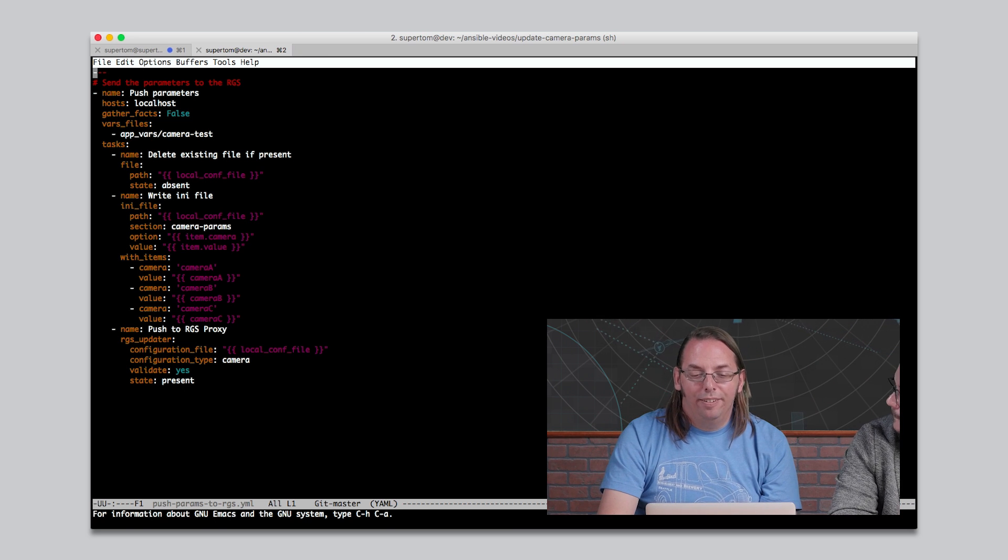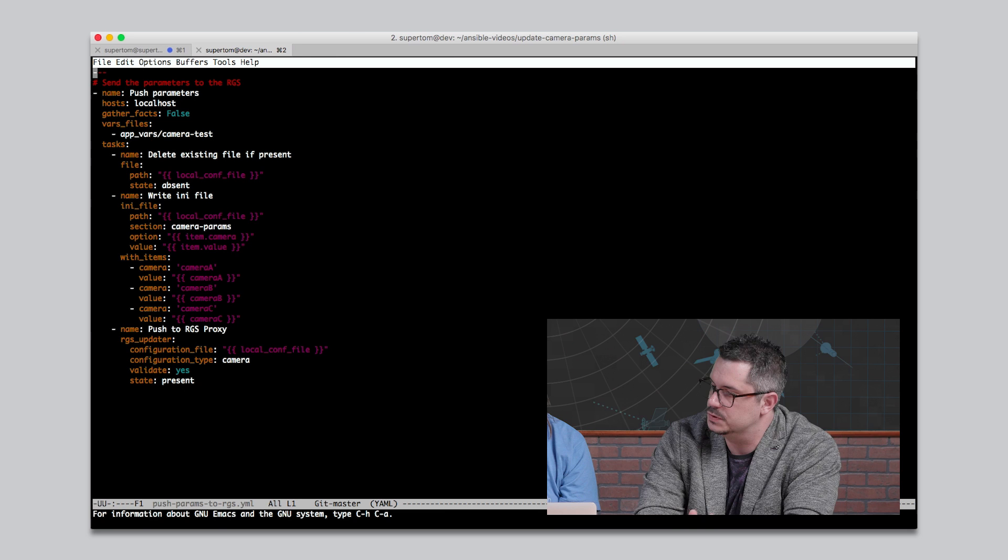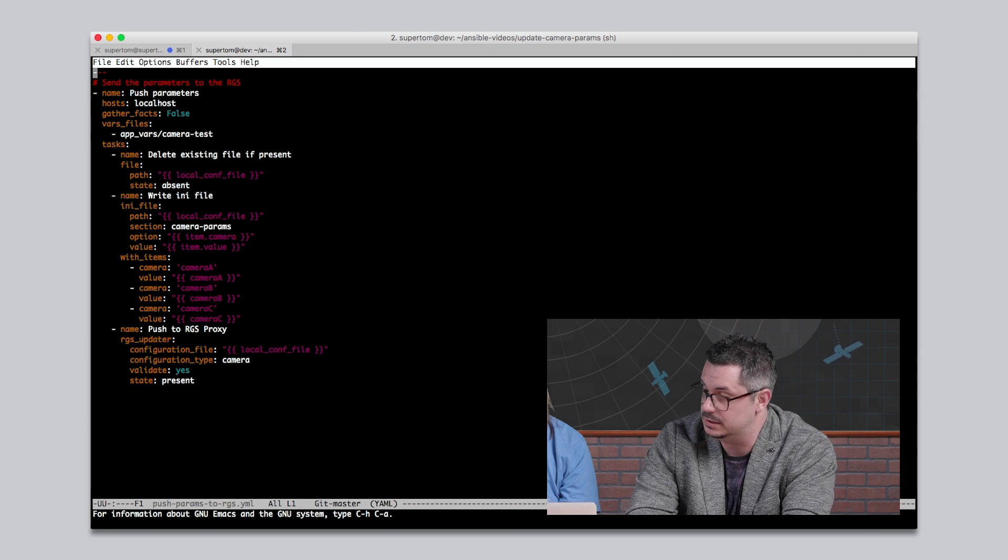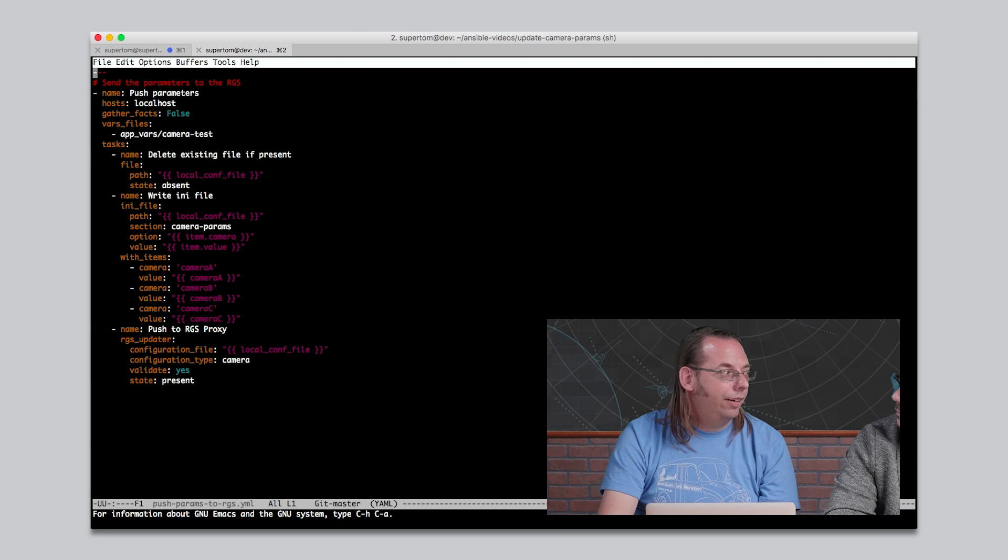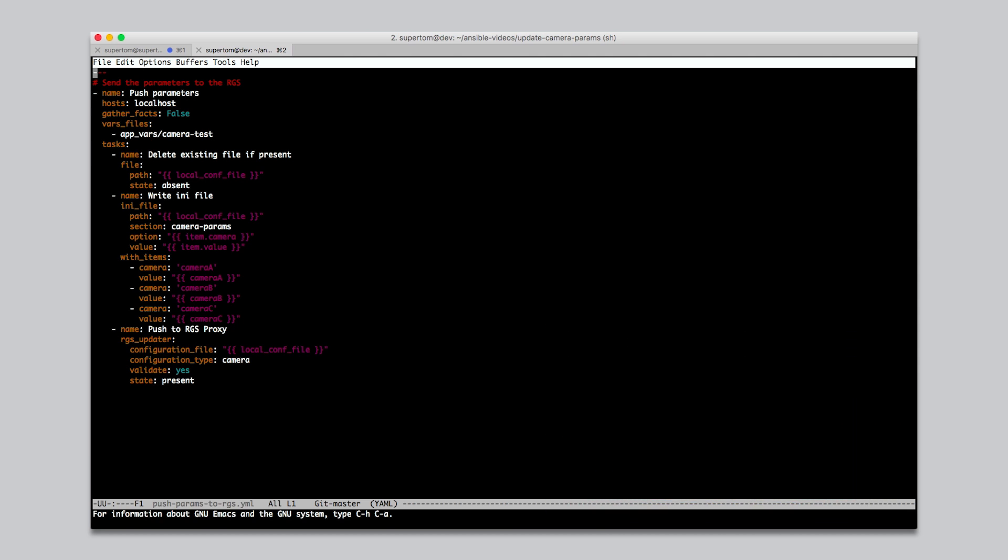Now assuming the tests have passed, we can actually push the camera configuration to the RGS, which will then send it to the satellite on the next pass. And to do that, it looks like you took advantage of a couple of community modules to write out that data, and you also have written your own custom module that doesn't come with Ansible to push the data to the satellite. Correct. Our updater code requires an ini file. So we use the ini file module to create it with our camera parameters. Then we created a custom module that validates the parameters and hands them to the binary, which submits them to the RGS, returning to us the status and the encrypted string for debugging. Building the custom module was easy, and we just placed it in the library directory and Ansible picked it up.